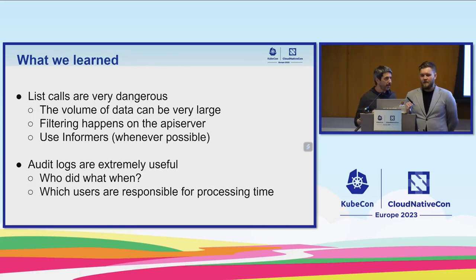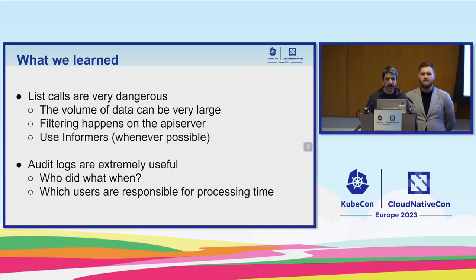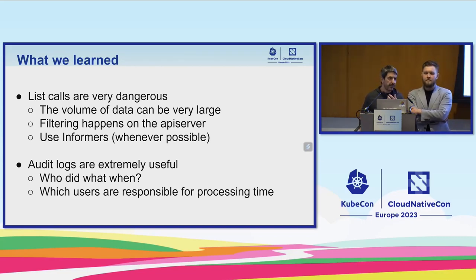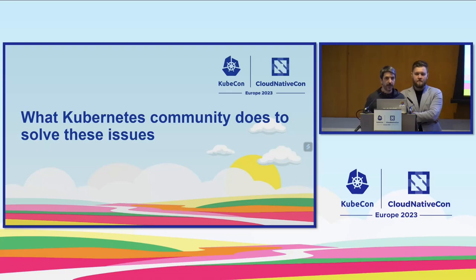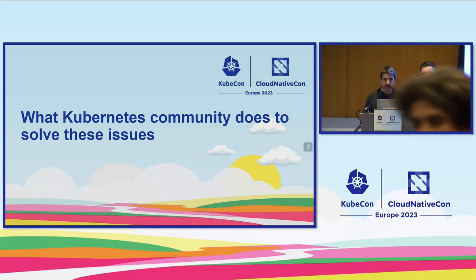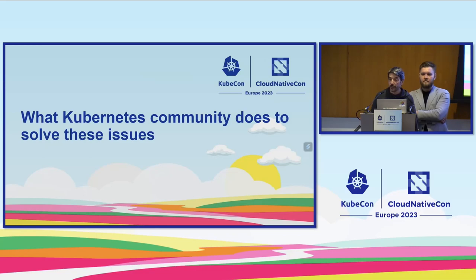As you've seen in the graphs, etcd didn't like it. This destroyed etcd. The way we fixed it was actually pretty simple: we replaced this with an informer and it was just done. The lesson is that these list calls can be very dangerous. Use informers whenever you can. Audit logs are extremely helpful — they tell you what happened, when, and give you an idea of what's consuming processing time. This type of incident is very common; we've seen it multiple times and many people have experienced it.